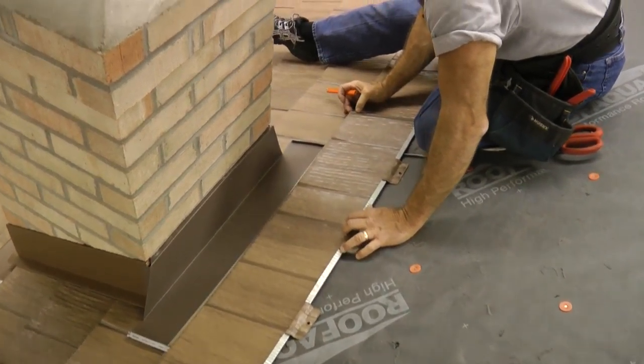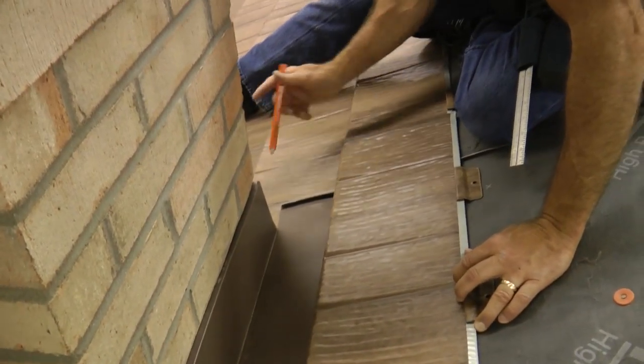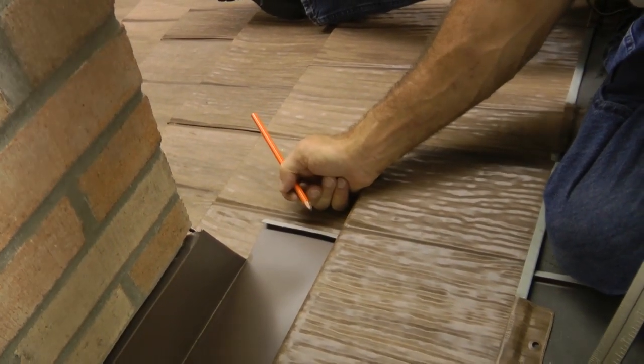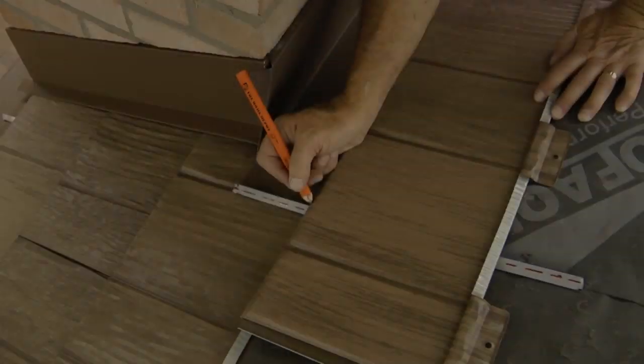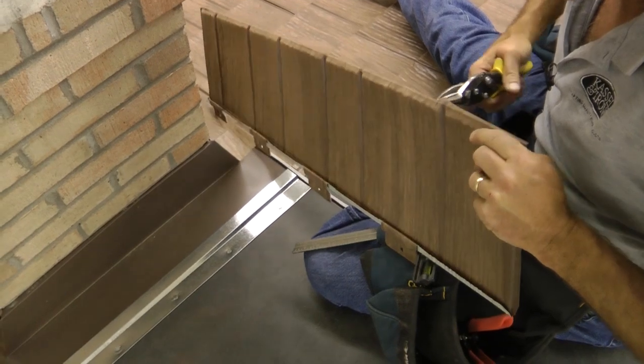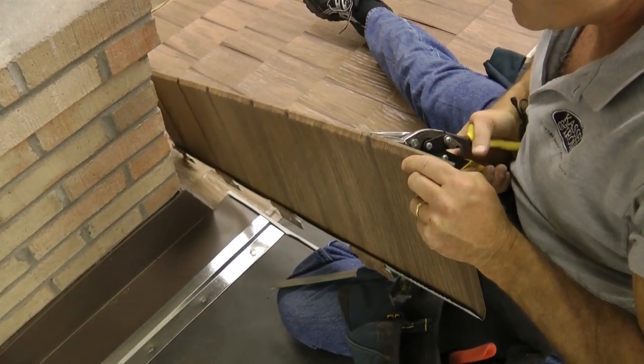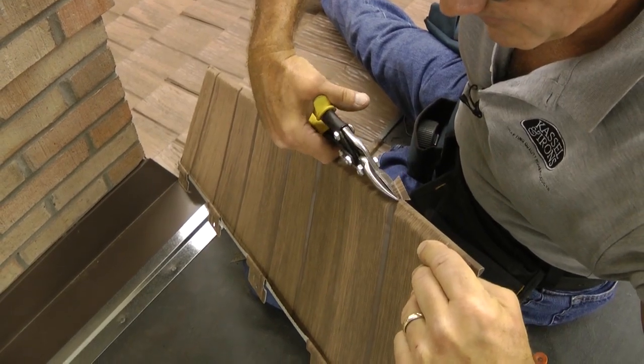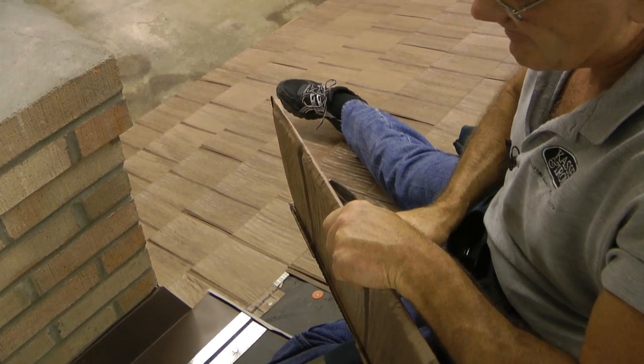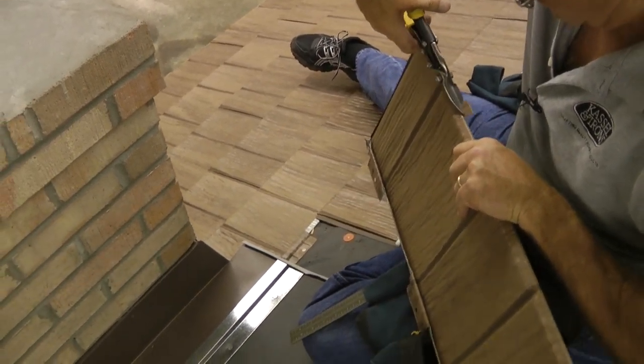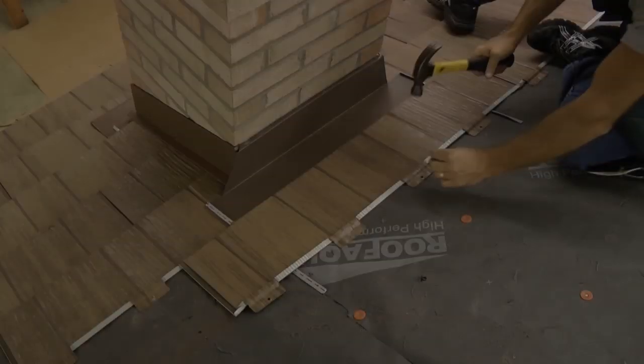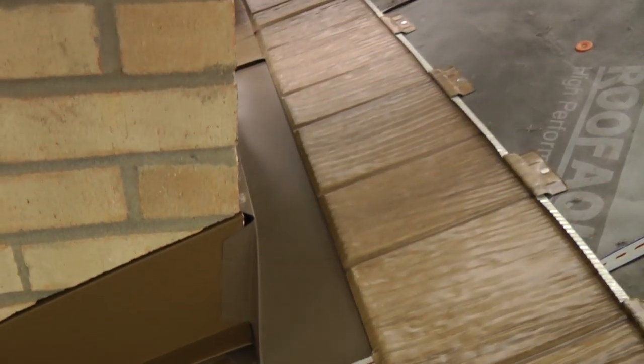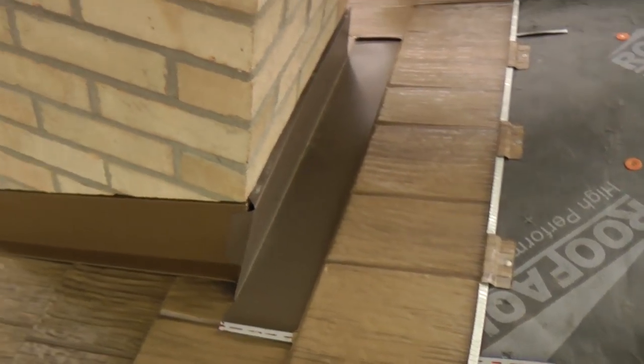I'm going to go ahead and set my shingle in place here and I'm going to have to make a little notch out right here to go over that return hem. Now we have successfully bridged the distance across the top pan and are ready to continue with our shingling.